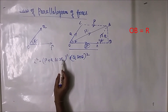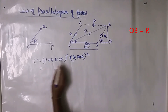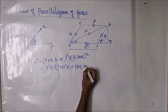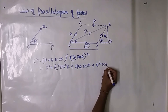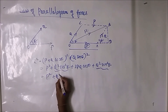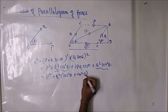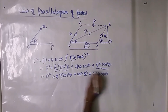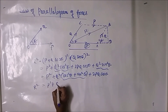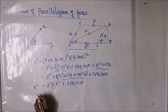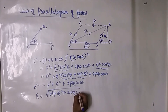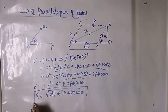So R squared equals P plus Q cos theta, all squared, plus Q sin theta, all squared. Expanding: R squared equals P squared plus Q squared cos squared theta plus 2PQ cos theta plus Q squared sin squared theta. Combining terms: R squared equals P squared plus Q squared times (cos squared theta plus sin squared theta) plus 2PQ cos theta. Since cos squared theta plus sin squared theta equals 1, the resultant formula is: R equals square root of P squared plus Q squared plus 2PQ cos theta.